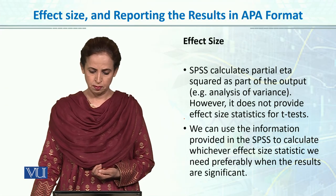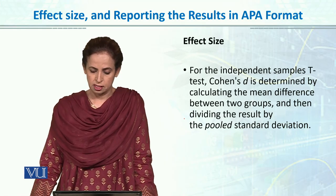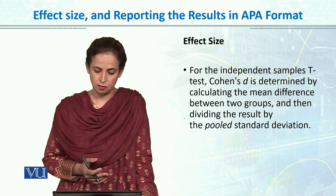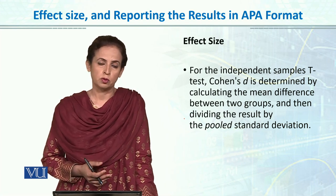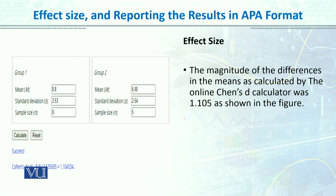Let me show you what that looks like. For the independent sample t-test, Cohen's D is determined by calculating the mean difference between two groups and then dividing that mean by the pooled standard deviation. So first we look at the difference of both means, and then we divide by the pooled standard deviation. When you go online and type 'Cohen's D calculator' in a Google browser, you will get a table where you enter the mean of group one, standard deviation of group one, and sample size of group one — and similarly the same values for group two. When you hit the calculate button, it will calculate and give you the Cohen's D value.